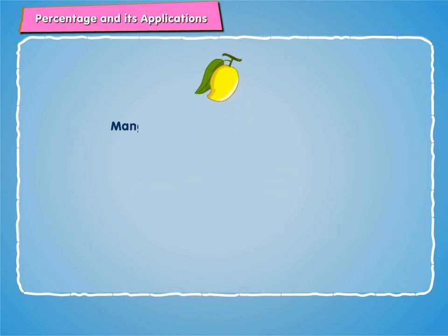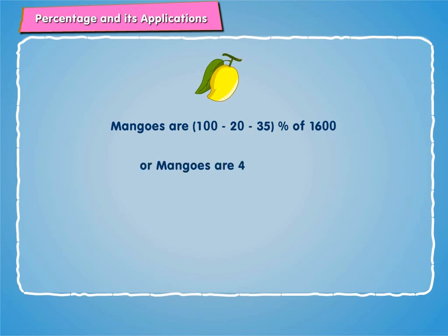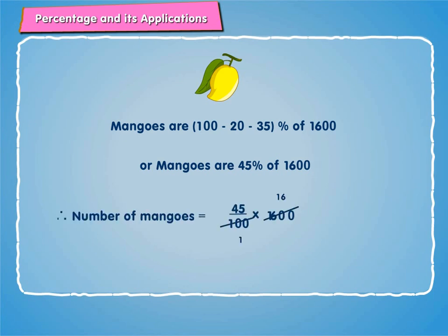Mangoes are (100 minus 20 minus 35)% of 1600. Therefore, number of mangoes is equal to 45/100 into 1600, which is equal to 720.